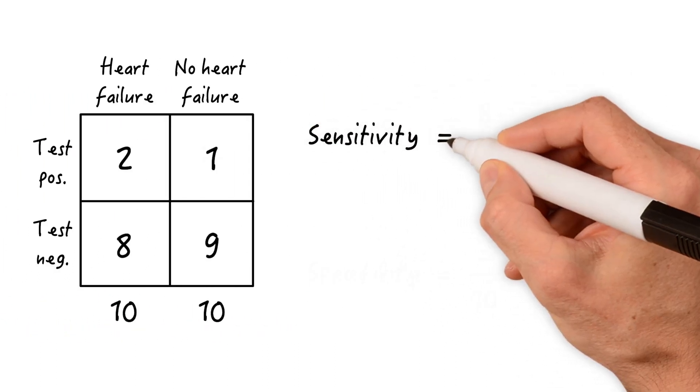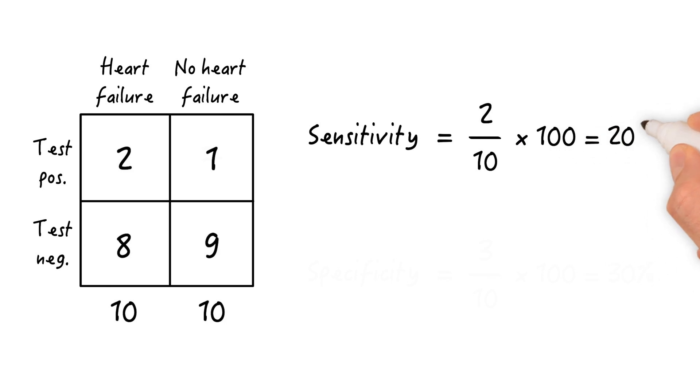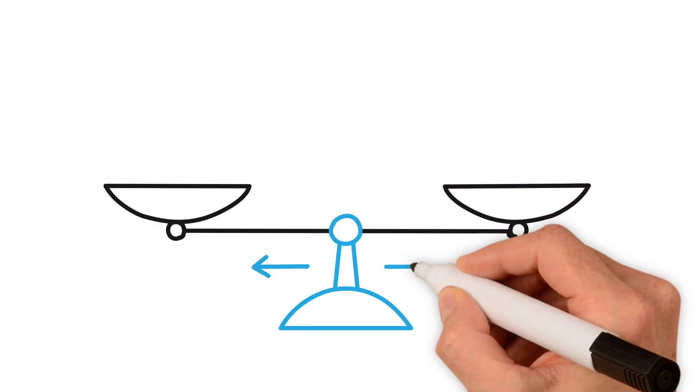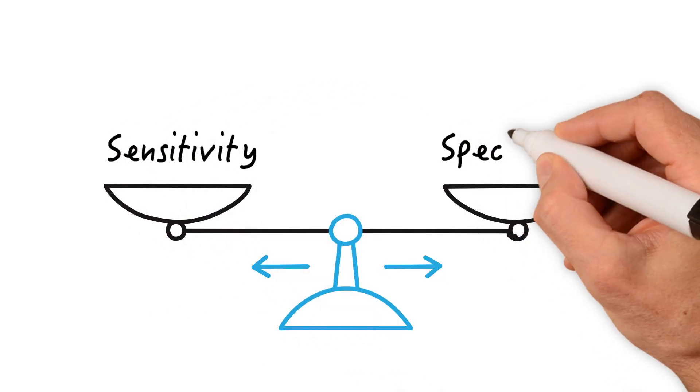So the sensitivity is 2 divided by 10 or 20%, and the specificity is 9 divided by 10 or 90%. Moving the threshold is usually a compromise between sensitivity and specificity.